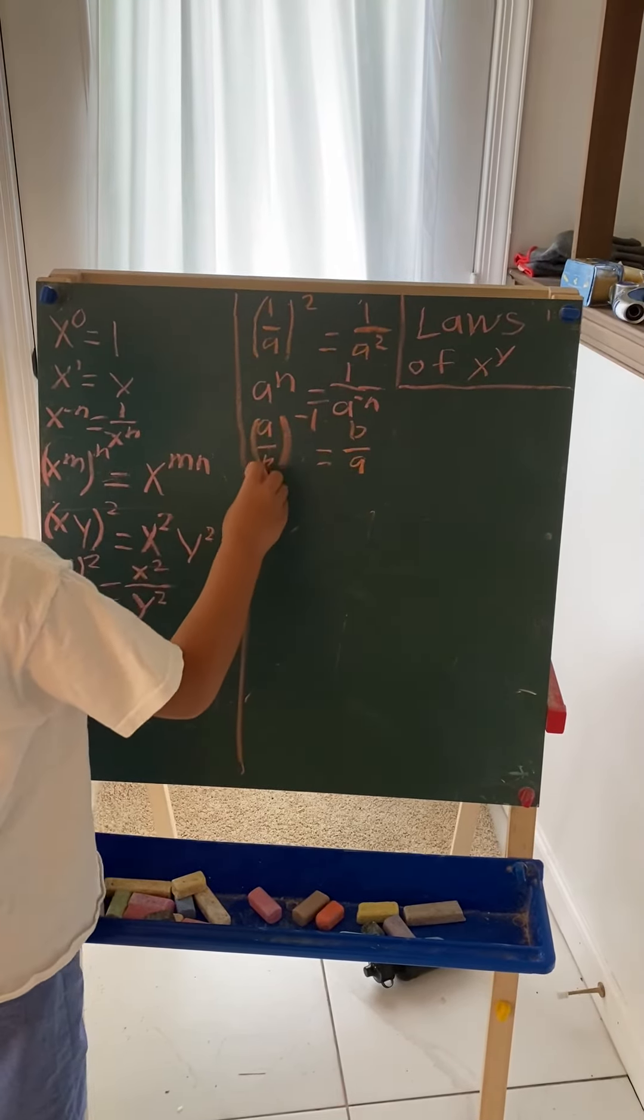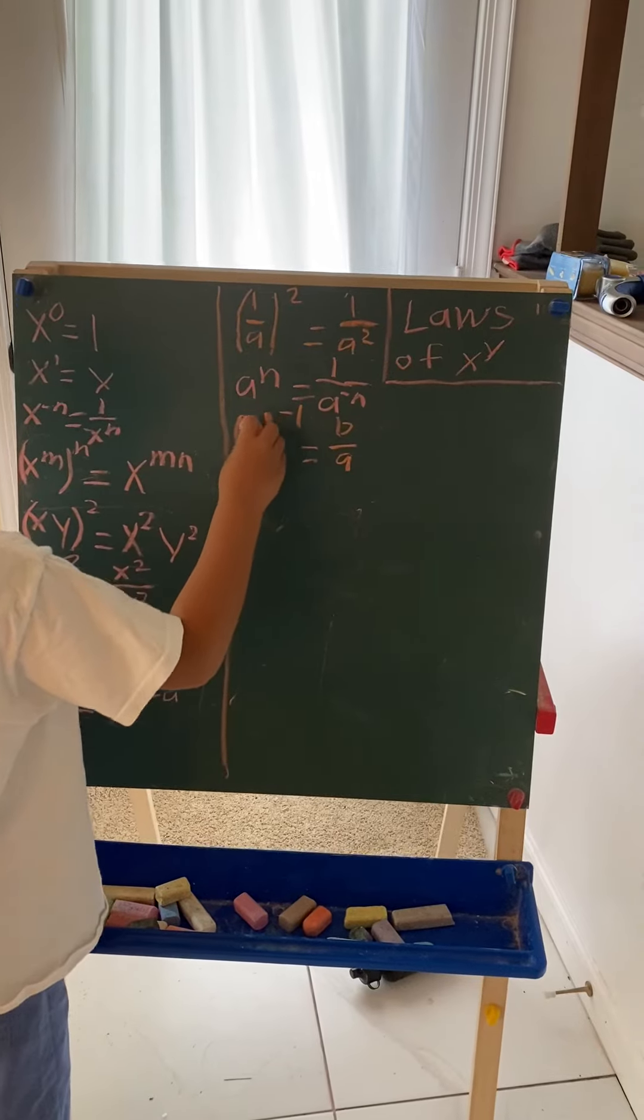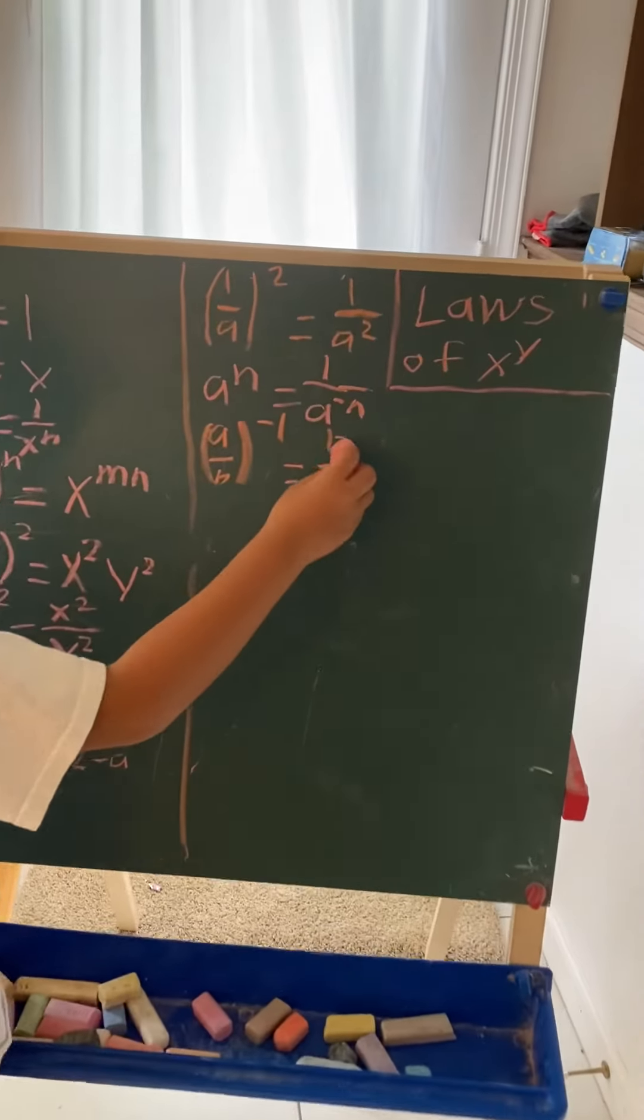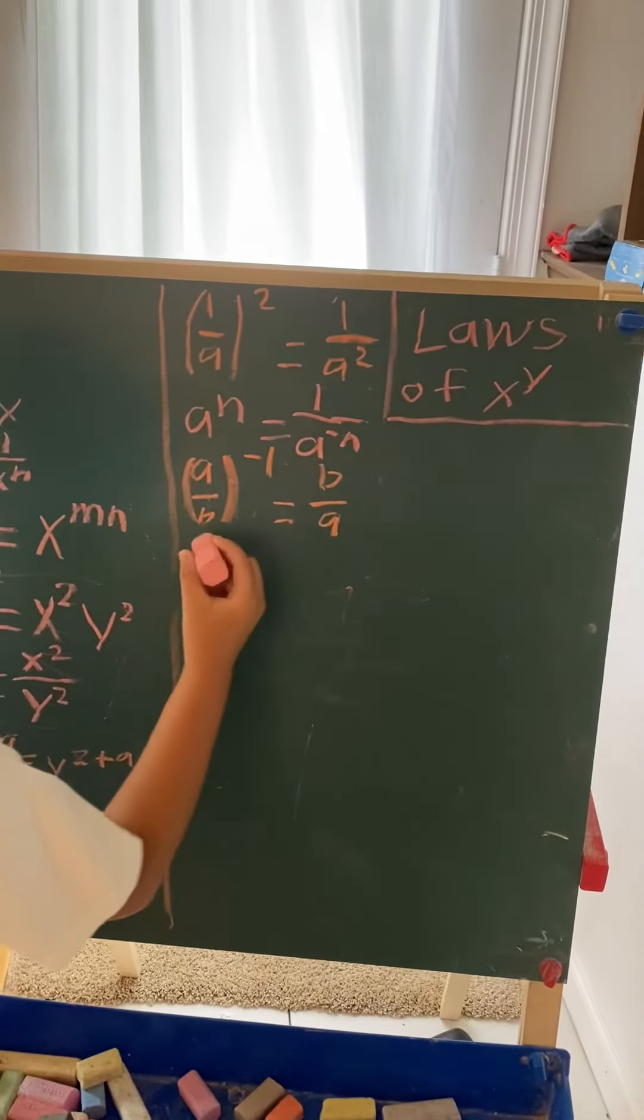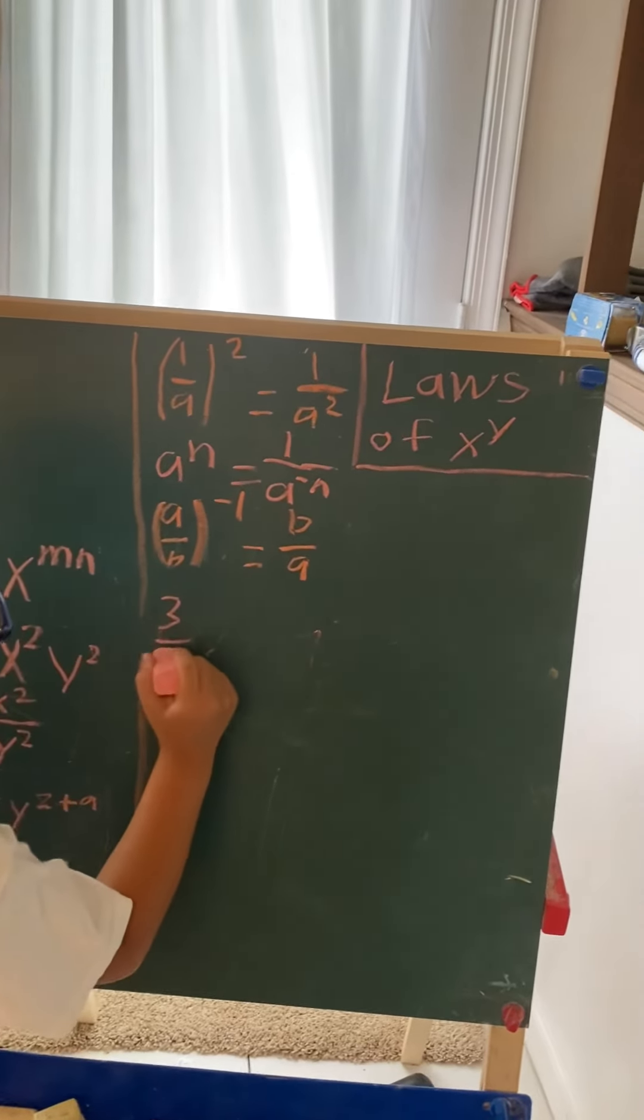And any fraction a over b to the negative 1 is b over a.